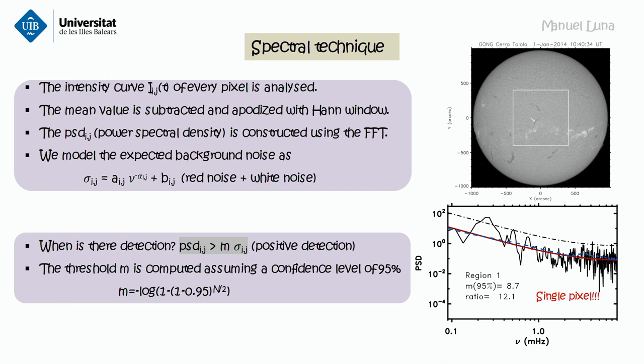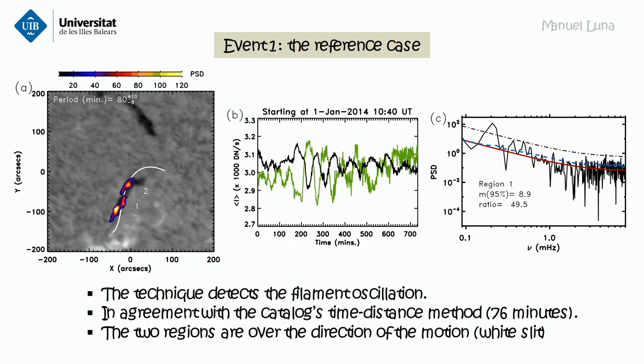In one example, we have a very strong peak in a pixel within a specific filament. We apply the technique for the first event of the catalog. We can see a strong emission around the filament, with a period that is the same as what we detected in the catalog. The white line represents the slit we use to track the motion, and we can see two regions around the path of the motion.